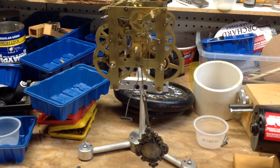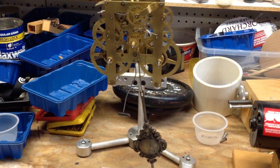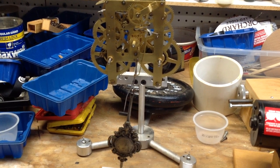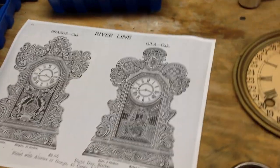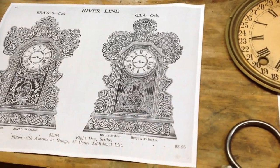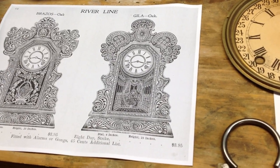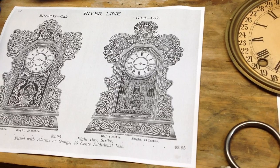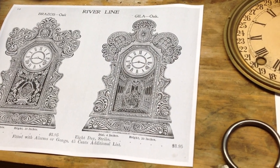So based on the information from the NAWCC forums, I went online and I found an Ingram catalog from 1903 and printed out a page from that catalog and it does show the Gila model which is made out of oak and it's part of the river line that they had of these kitchen clocks.